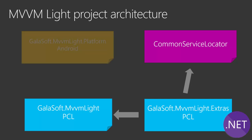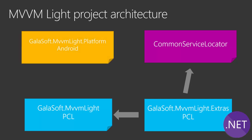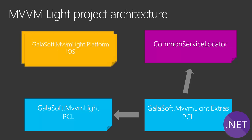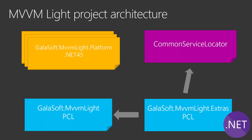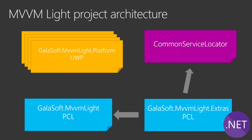In addition to the core and extras, I have platform-specific components. For example, I have a data binding system for Android and iOS — not needed on Windows since it has its own — plus platform components specific to .NET or UWP. That is the architecture of the Portable Class Library version of MVVM Lite.